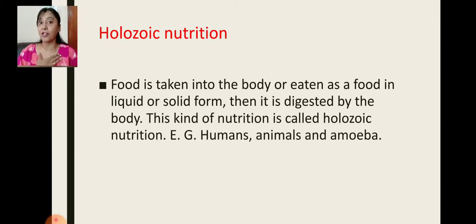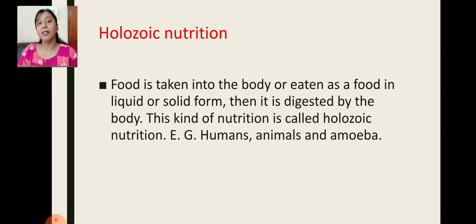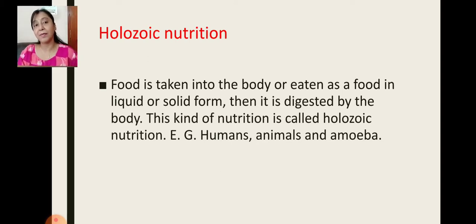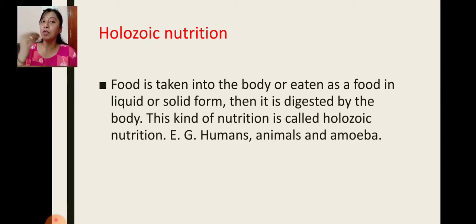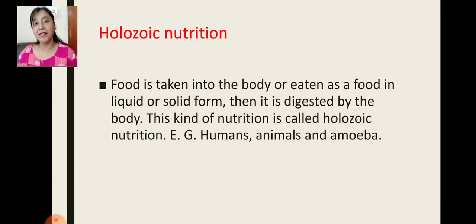In holozoic nutrition, food is taken into the body in liquid or solid form, then it is digested by the body. This kind of nutrition is called holozoic nutrition — examples include humans, animals, and even the unicellular organism amoeba. First we take in the food, then the food gets digested, and in this chapter we are going to study holozoic nutrition in detail.